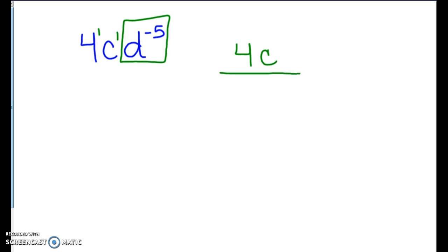And to make that positive, we're going to move it below into the denominator to make it positive. So notice we didn't have to move everything, we only had to move the one that was negative. So this is our answer: 4c over d to the fifth power.